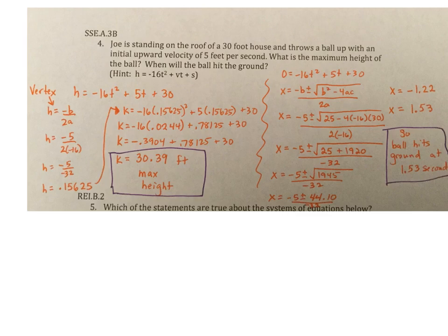All right, number four, Joe is standing on the roof of a 30 foot house and throws a ball up with an initial upward velocity of five feet per second. What is the maximum height of the ball? When will the ball hit the ground? Hint, H equals negative 16 T squared plus VT plus S. So to find the maximum height, there's two questions here. Thus my two sections here. To find the maximum height, I need to find the vertex because we know that the vertex is giving me the maximum or the minimum. And they actually straight up said maximum. That was my, what should trigger. So to do so, I have to find the H value first.